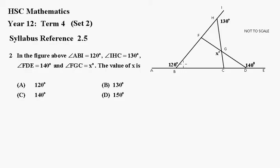First of all, let's work out this one here, because it's a fairly easy one to work out. That's just a straight angle, so that should be 60 degrees. 120 plus 60 is 180.